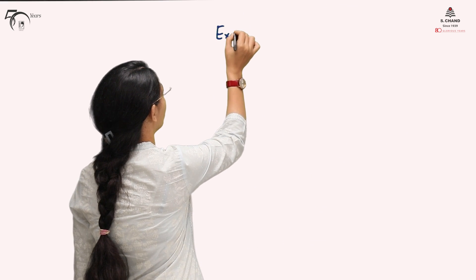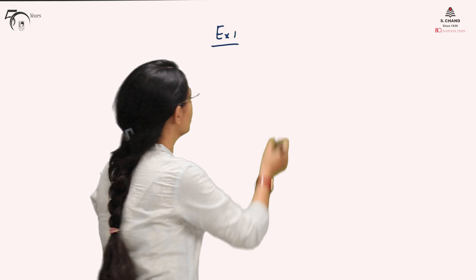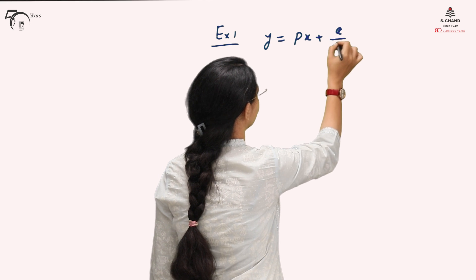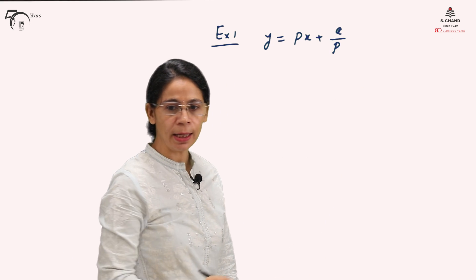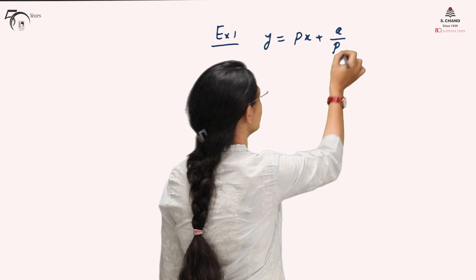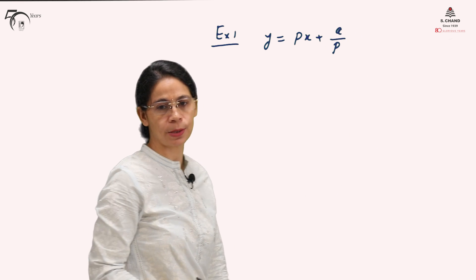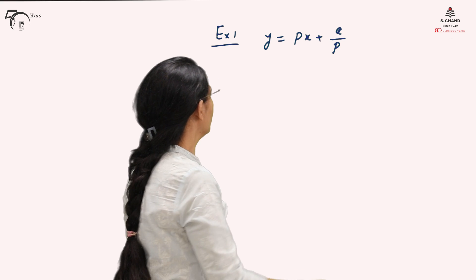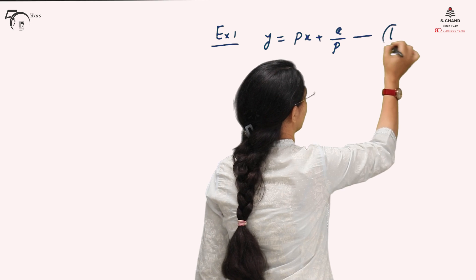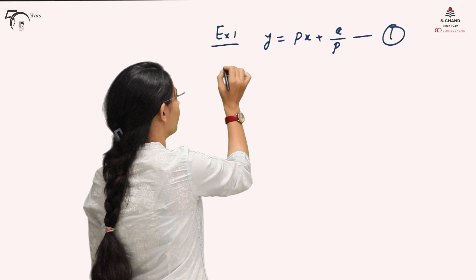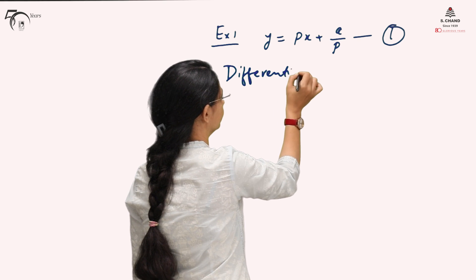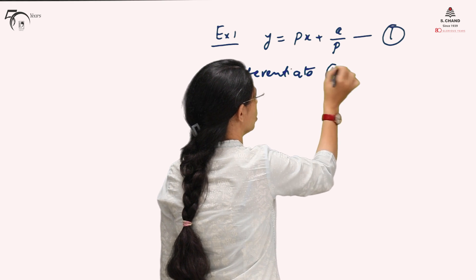Let us take example number one for this Claret's form. The given differential equation is y equals px plus a/p. We can see it is written in the form y equals px plus f(p), and f(p) is free of x. Let us find the solution. We call this equation number one and differentiate it with respect to x.